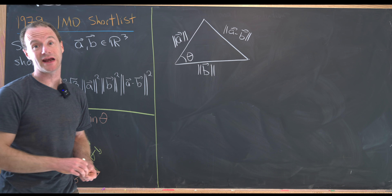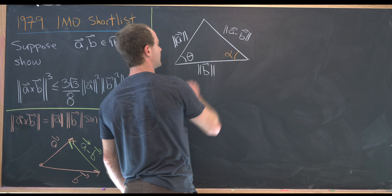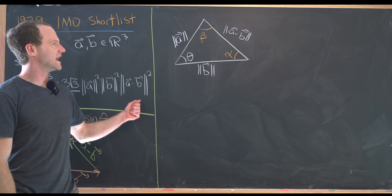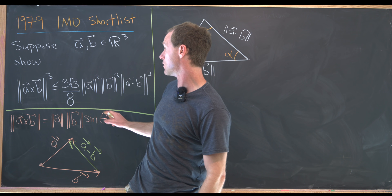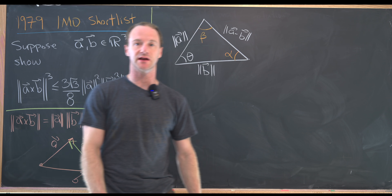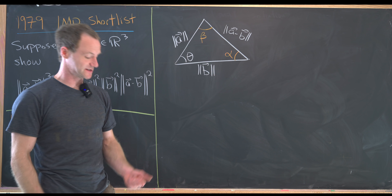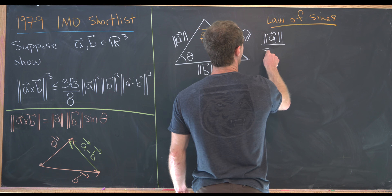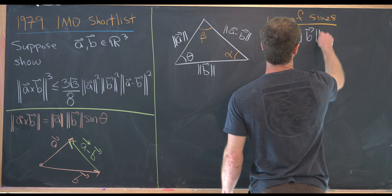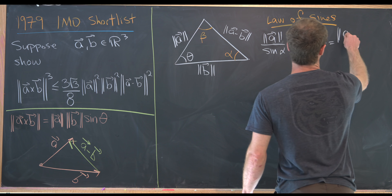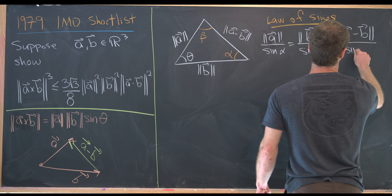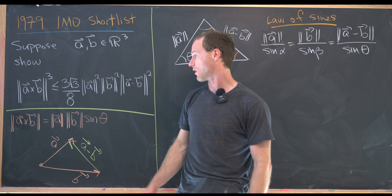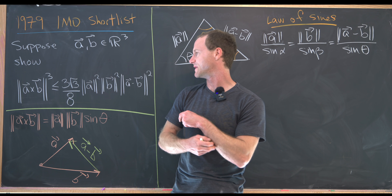Let's give names to the remaining angles in this triangle. We'll call this angle alpha because it's opposite side A, and we'll call this angle beta because it's opposite side B. Since we had the magnitude of the cross product involving sine, let's write down the law of sines: magnitude of A over sine alpha equals magnitude of B over sine beta, which equals magnitude of A minus B over sine theta.